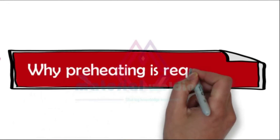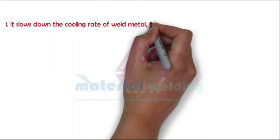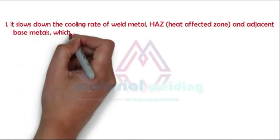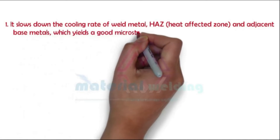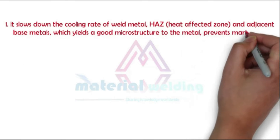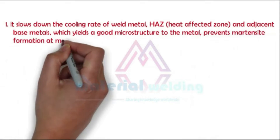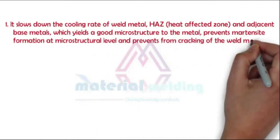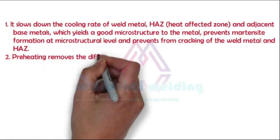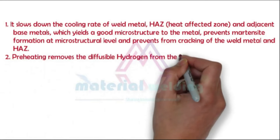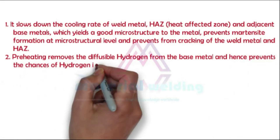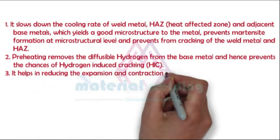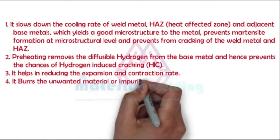So why is preheating required? Preheat slows down the cooling rate of weld metal, heat-affected zone, and adjacent base metal, thus yielding a good microstructure to the weld metal and preventing martensite formation, thus preventing cracking of the weld metal and heat-affected zone. Preheating also removes diffusible hydrogen from the base metal and hence prevents hydrogen-induced cracking (HIC) or delayed cracking. Preheat also helps in reducing the expansion and contraction rate in the weldment and weld joint, and hence reduces distortion in welding.